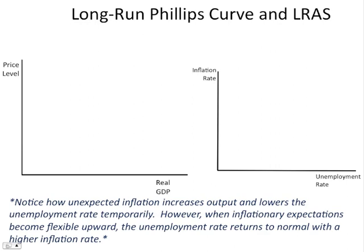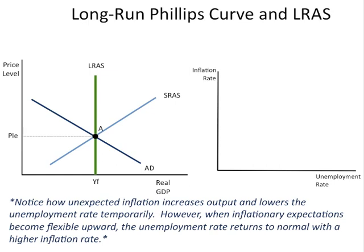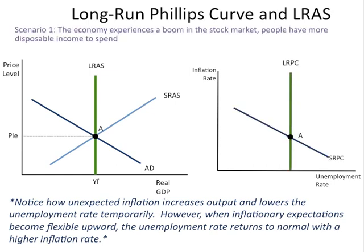Today we're going to look at the long run Phillips curve next to the long run aggregate supply curve, and look at some different scenarios to identify the impact of one graph on another. The first thing is to start off in long run equilibrium on both the aggregate supply and demand model and the Phillips curve model.